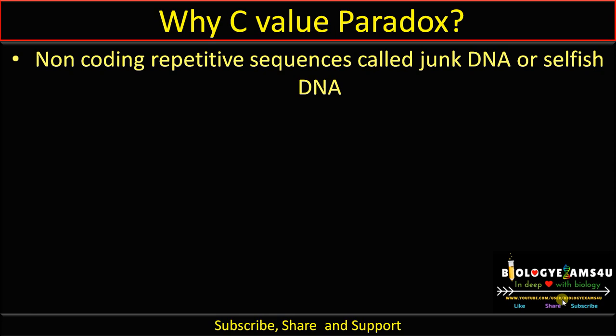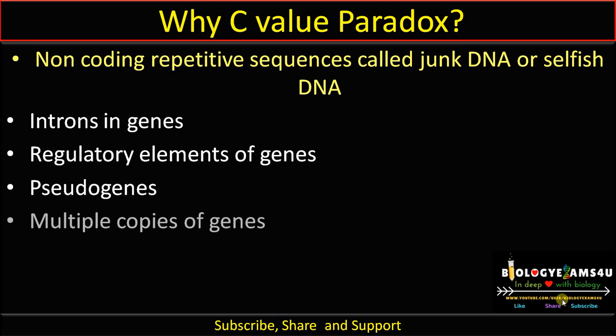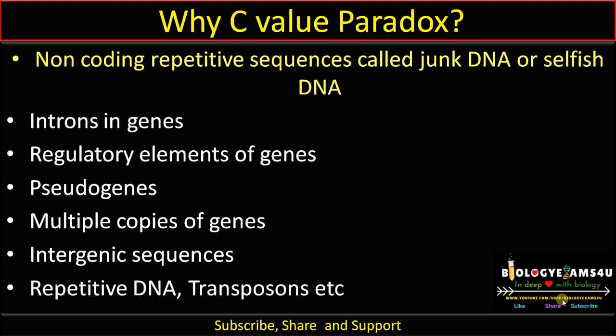There are different types of non-coding repetitive sequences: introns within genes, regulatory elements of genes which do not code for any proteins, pseudogenes, multiple copies of a gene present in the genome, intergenic sequences also called spacer DNA between genes, and repetitive DNA transposons. All of these contribute to the massive genome size rather than the complexity of an organism.